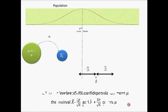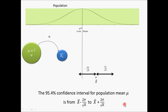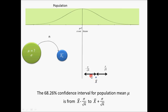What summarizes this finding is that the 95.4 percent confidence interval for the population mean is from X-bar minus 2-sigma divided by square root of n to X-bar plus 2-sigma divided by square root of n. It is obvious that if we wanted a different level of confidence — say 90 percent or 68 percent — then based on the normal distribution we can go a different distance from the sample mean. For example, the 68.26 percent confidence interval for the population mean is from X-bar minus sigma divided by square root of n to X-bar plus sigma divided by square root of n.